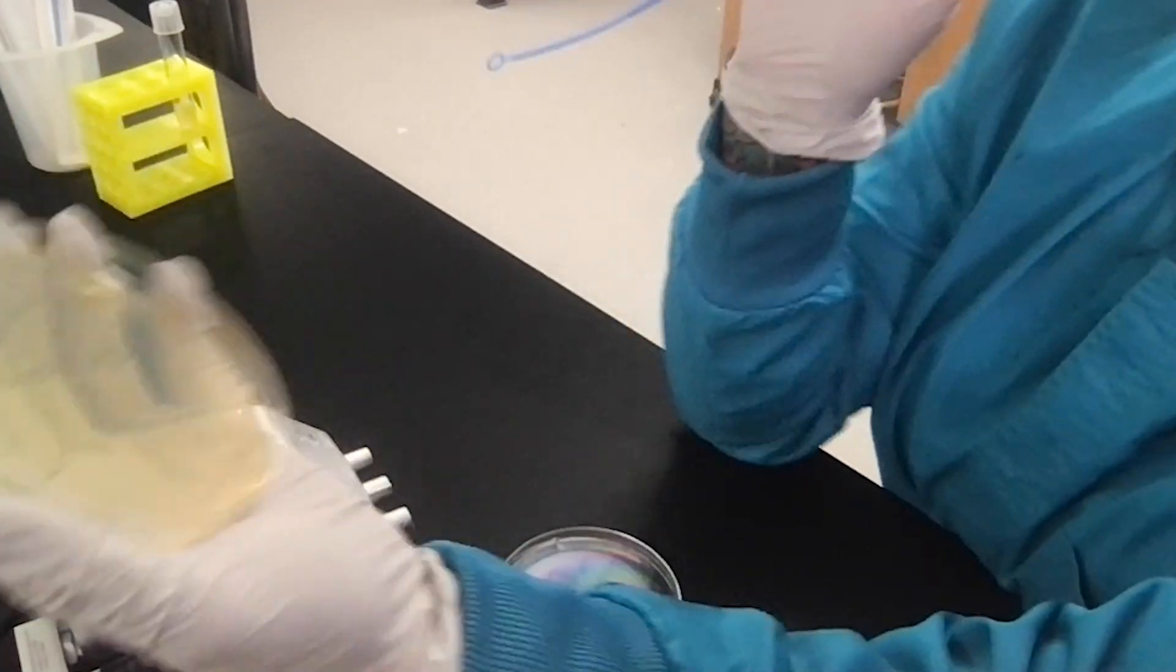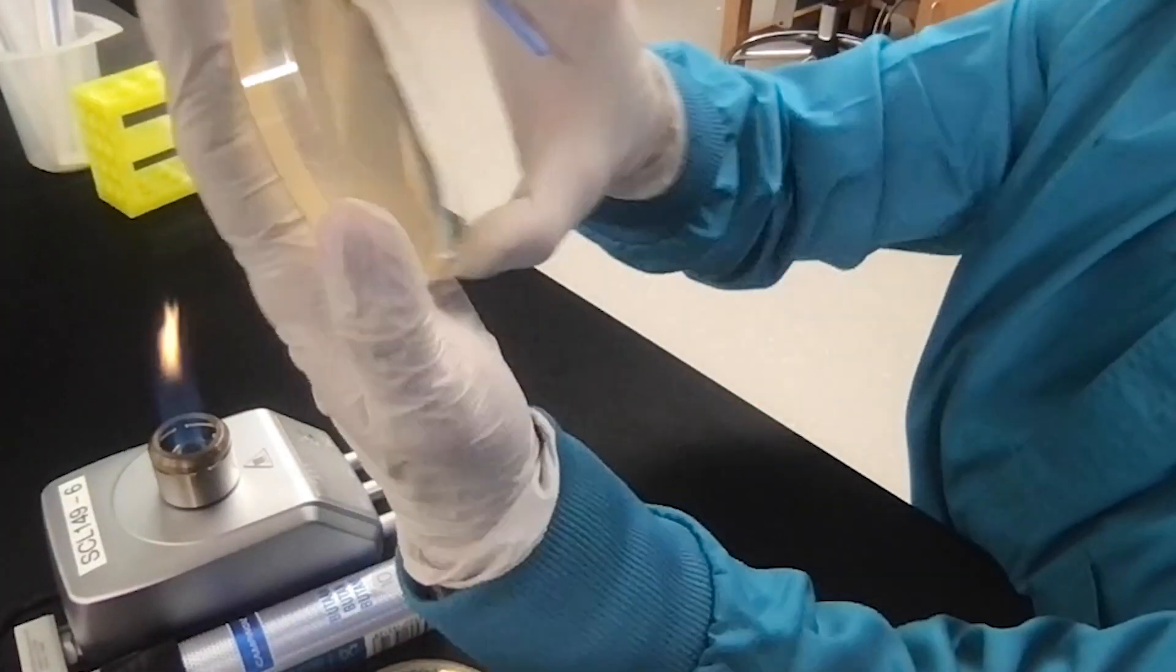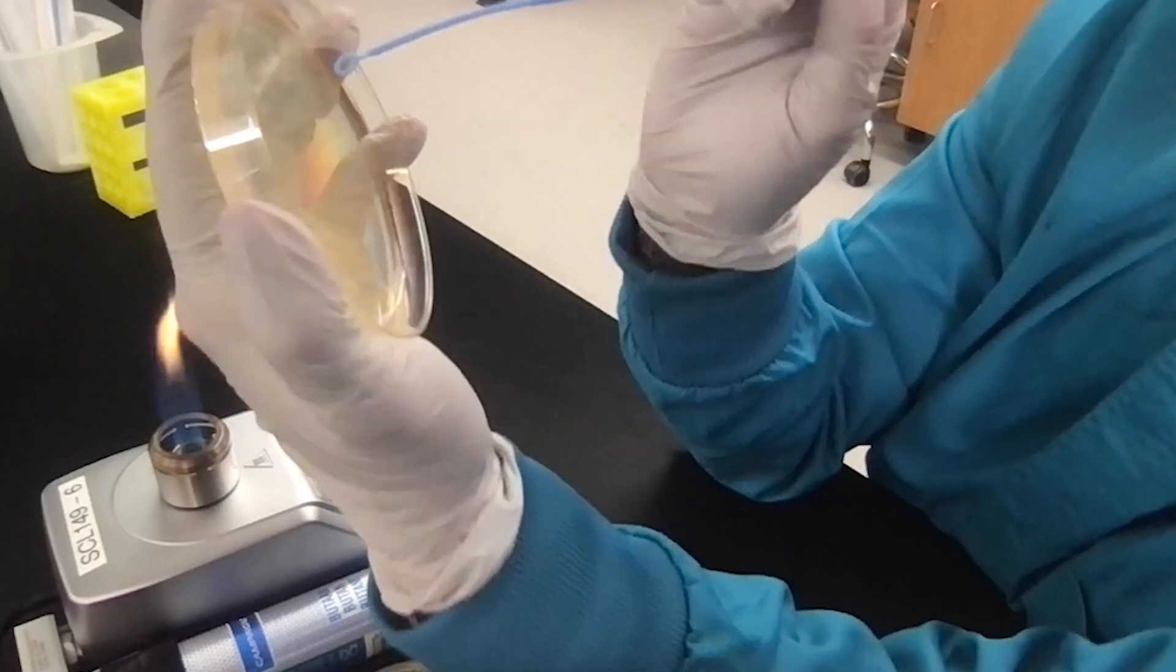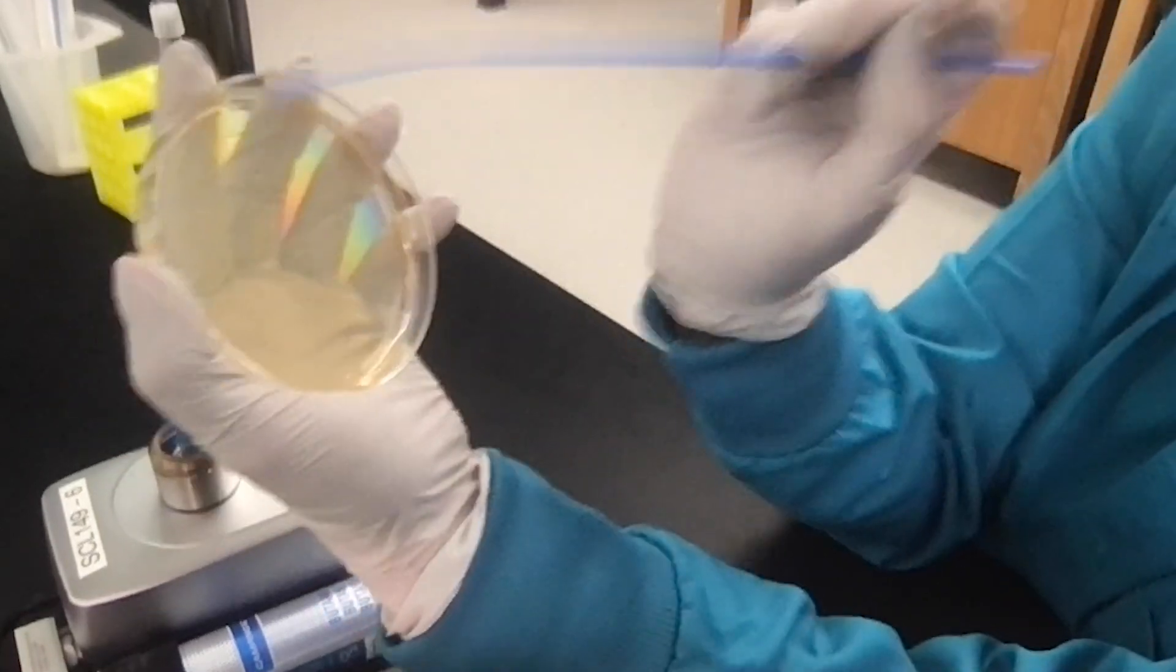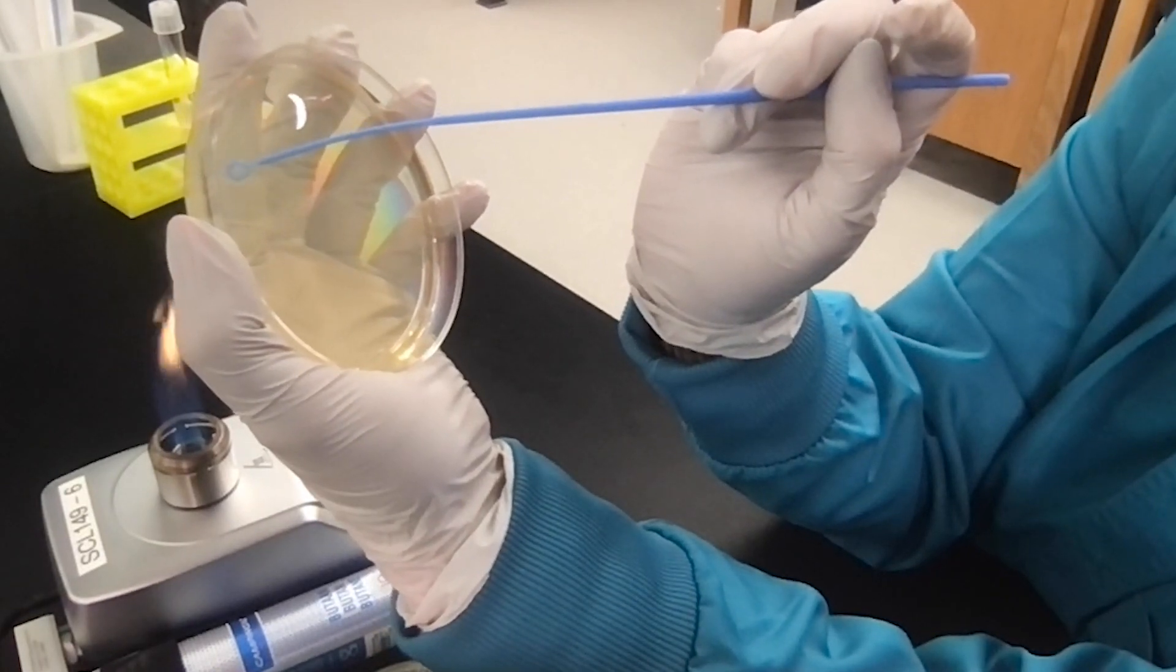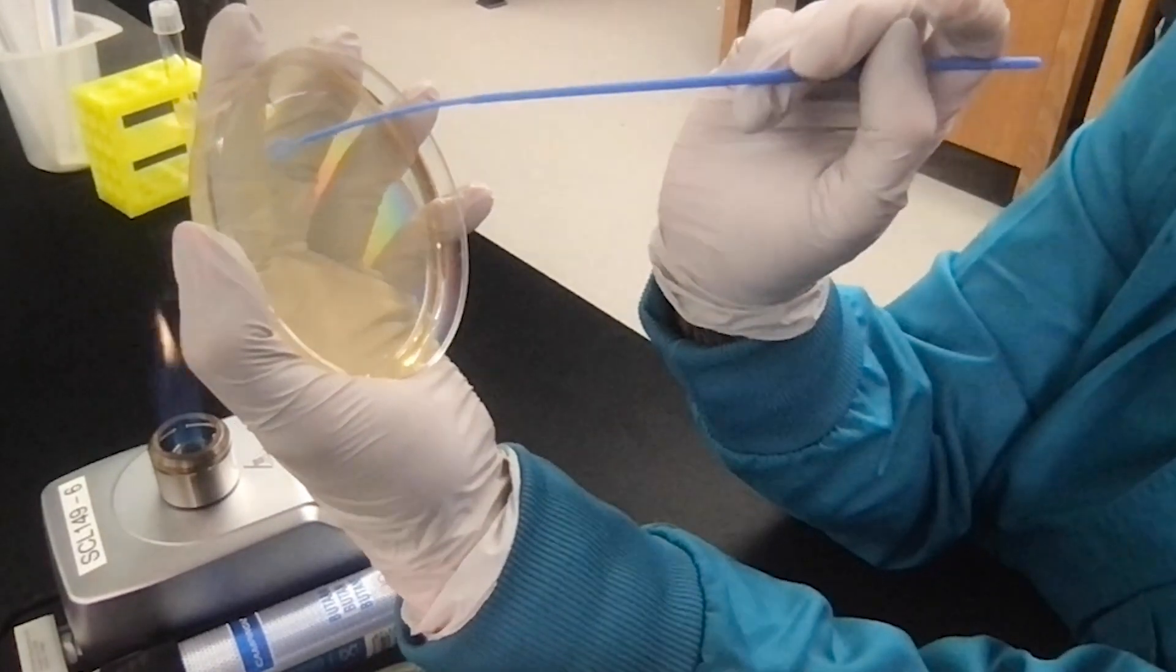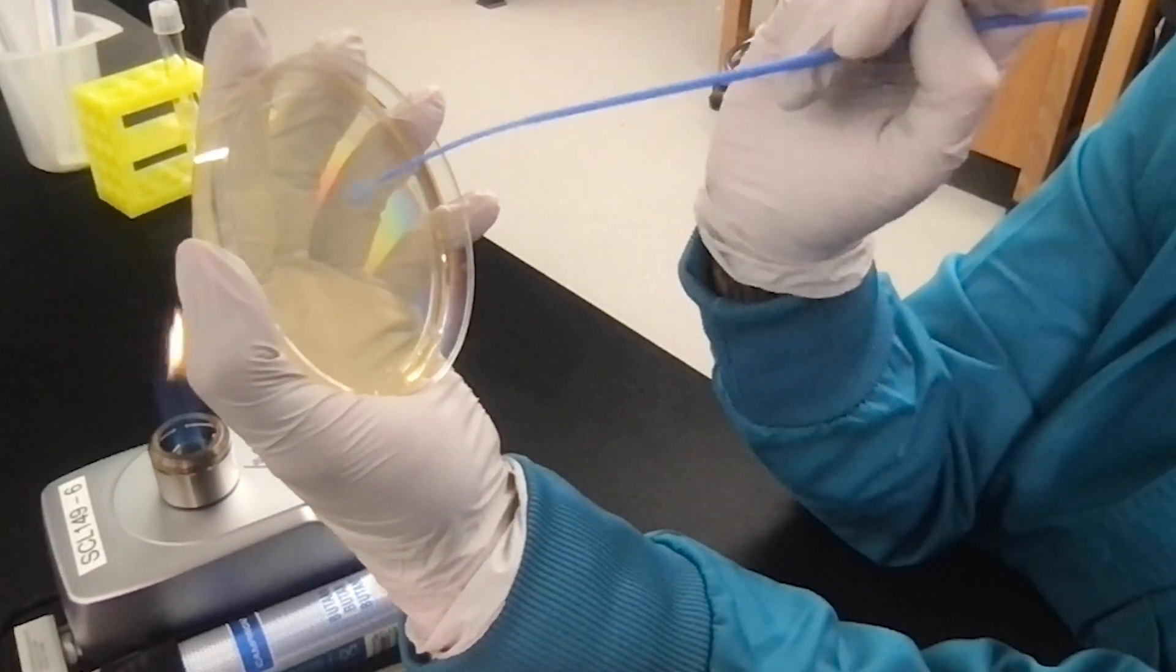I now have another inoculation loop here. So I'm going to turn this another 90 degrees or so. I can see when the light catches it where my last streak was. So now I'm going to drag this inoculation loop through that last line of the previous streak. I'm just going to go ahead and fill this up for the sake of this demo.